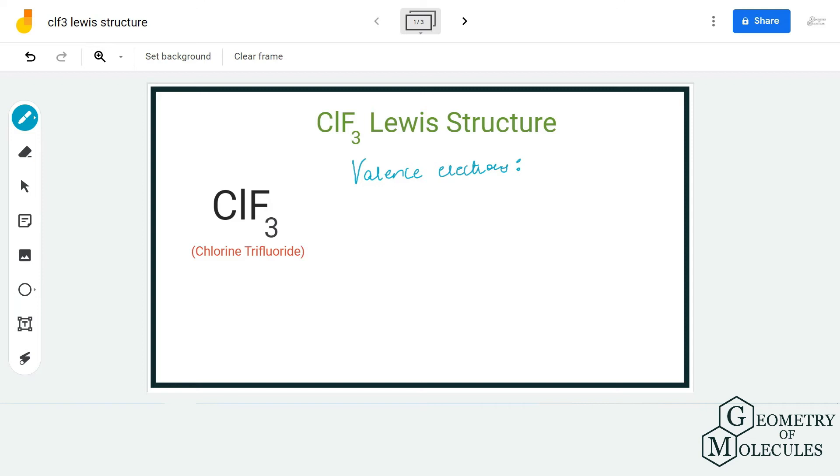Hi guys, welcome back to our channel. In today's video we are going to help you determine the Lewis structure for ClF3, the chemical formula for chlorine trifluoride. To start with its Lewis structure, we first need to know the total number of valence electrons.